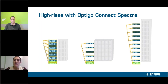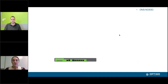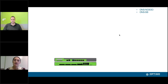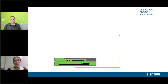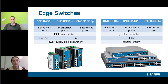Every single Optical Connect network starts with a network controller — the green network controller is the brains of the system and hosts Optical OneView, which is your network management system. Paired with that is our Spectra aggregation switch, the ONSS8 — that's the brawn of the system. Every Spectra system is going to have an ONSS8, and these two are always paired together. From there we are going to run two fibers, which we'll talk about in a moment.